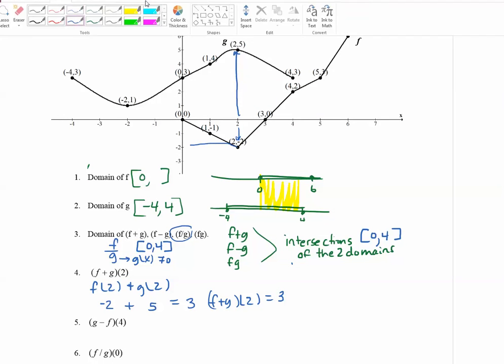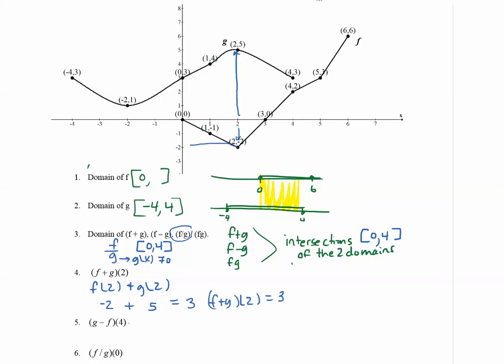Now let's do g minus f of 4. So that can be rewritten as g of 4 minus f of 4. So g of 4 means we want to go to the x-axis at 4, and we want to go to the g graph. And the answer is the y value 3.